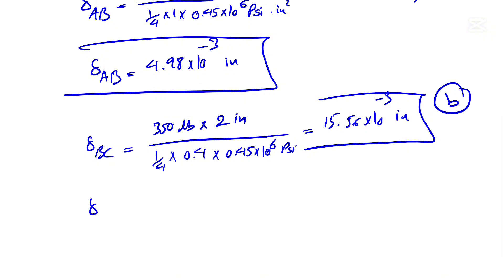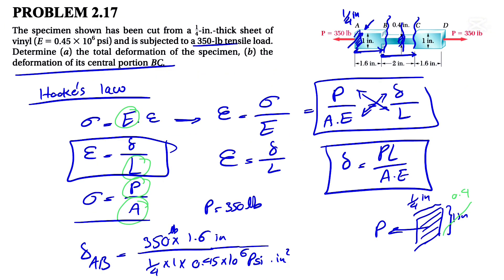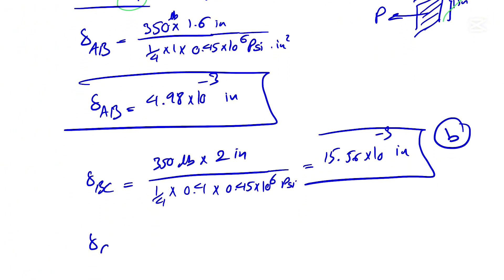And the last one is the CD section, which is very similar to what we have for AB. If we look at it, we have same force, same dimension, same Young's modulus, so we don't need to actually calculate that one. So CD is basically what we found for AB, so 4.98 times 10 to the minus 3 inches.